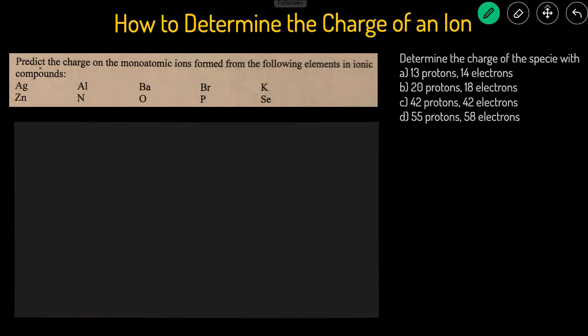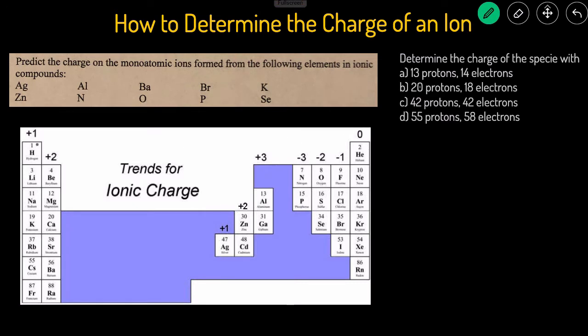So let's start with the first situation. Here we are just given the neutral elements, and then we have to determine the charge that the elements would take on when they're in an ionic compound. So the easiest way to do this is to take a look at the periodic table, and the elements follow specific trends.